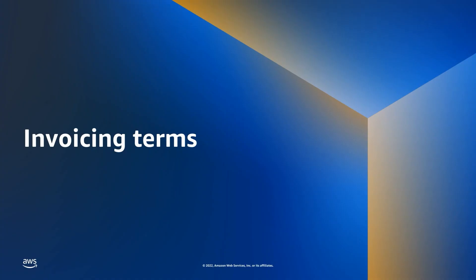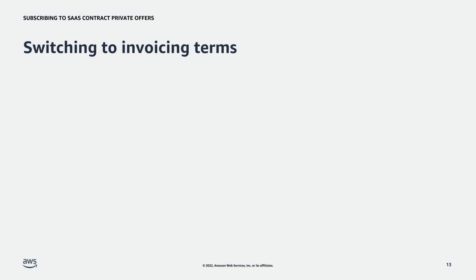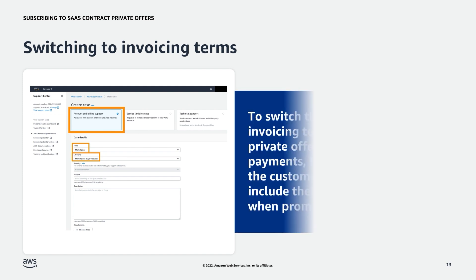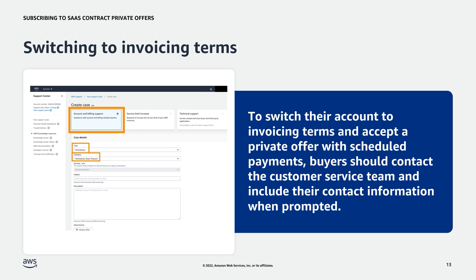Now we'll look at how to switch to invoicing terms. For buyers to accept private offers with one or more scheduled payments, the buyer must be on invoicing terms with AWS. This is also referred to as ACH Direct Debit Payment. To switch an account to invoicing terms and accept a private offer with scheduled payments, contact the customer service team and include the following details: Account and Billing Support Type, Marketplace Category, Marketplace Buyer Request Description — 'I would like to switch my account to invoicing terms to accept a private offer' — Company Name, Contact Name, Phone Number, Email, and Mailing Address.